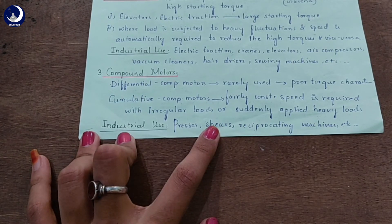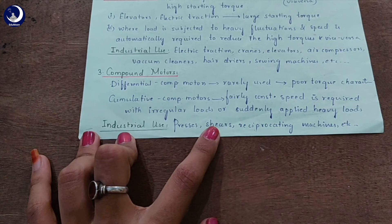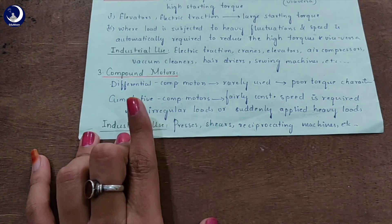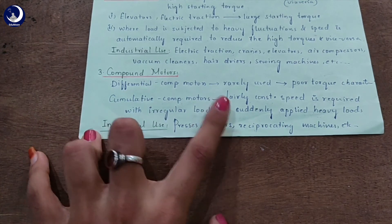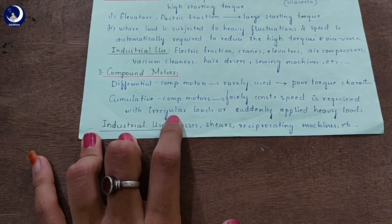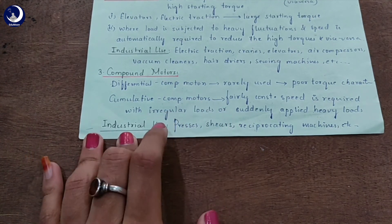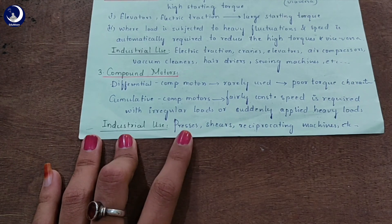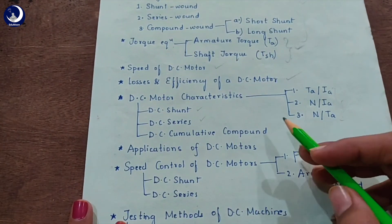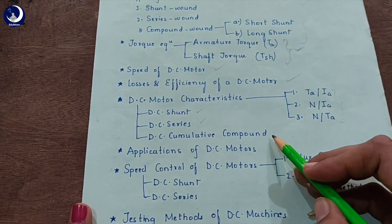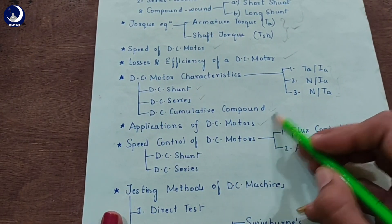The last type is compound motors. Differential compound motors are rarely used because of their poor torque characteristics, so we only use the cumulative type. Cumulative compound motors are used where a fairly constant speed is required with irregular loads or suddenly applied heavy loads. The industrial uses of compound motors include presses, shears, reciprocating machines, etc. In this lecture, we have finished the DC motor characteristics for the DC cumulative compound motor as well as the applications of DC motors. Thank you.